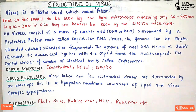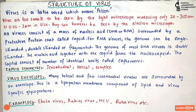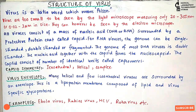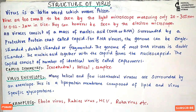In helical symmetry, the capsomeres are arranged around a spiral of nucleic acid. Helical viruses can appear spherical, elongated, or filamentous. The third symmetry type is complex, meaning the capsid symmetry is neither icosahedral nor helical.